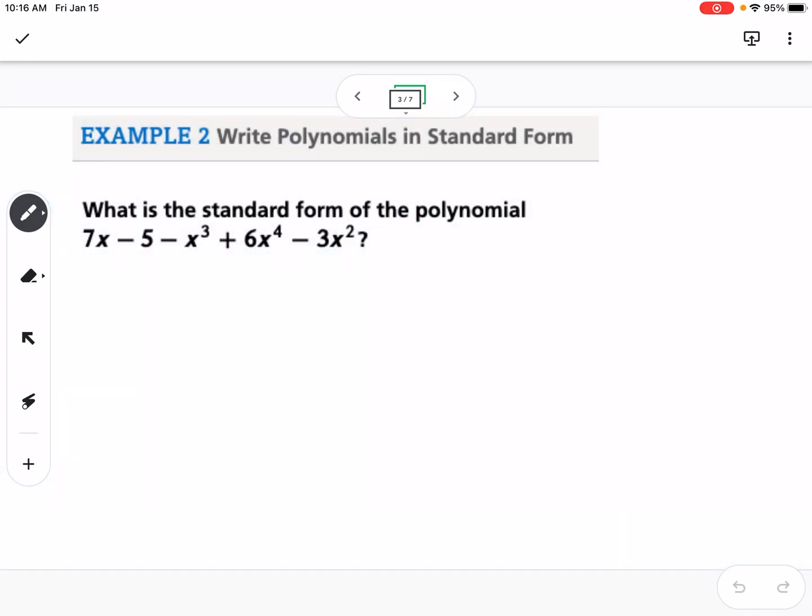Okay, so our first example is what is the standard form of the polynomial? So standard form means that we're going to arrange our polynomial from the highest degree to the lowest degree. So we look for the highest power of x, and that's our first term. So our highest power is x to the 4th, so we're going to write 6x to the 4th,